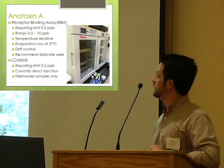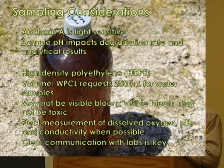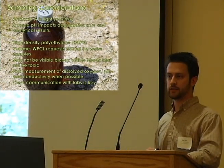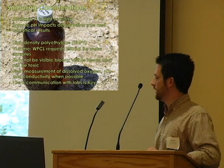Sampling considerations with anatoxin-A: anatoxin-A is pretty light sensitive, so you either want brown glass or brown polyethylene containers. Also, sample pH can impact the degradation rate — if your sample is acidic, you're losing a lot of that toxin in the time it takes to get the sample to the lab. So if you have the capability, check the pH, and if it's high, either bring the pH down or let the lab know. If it's not a lot, they may suggest freezing it or can help you out with that.